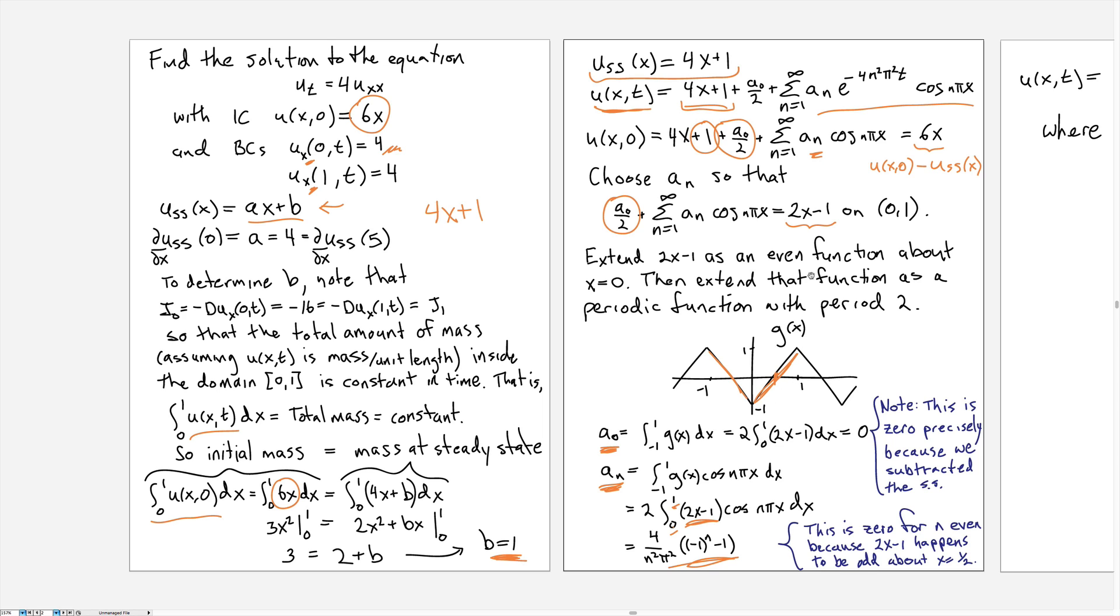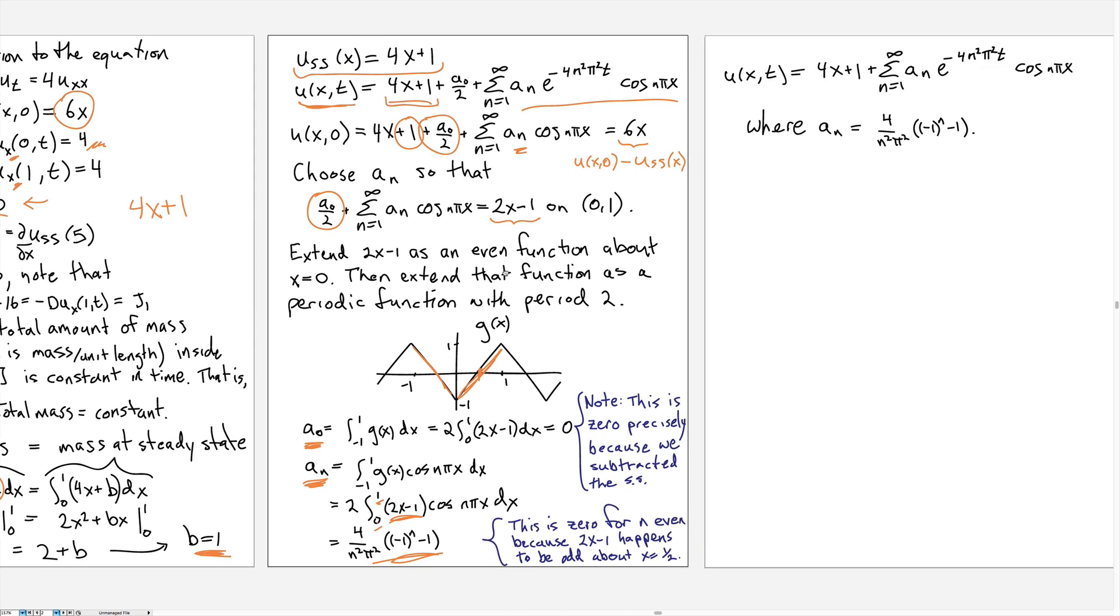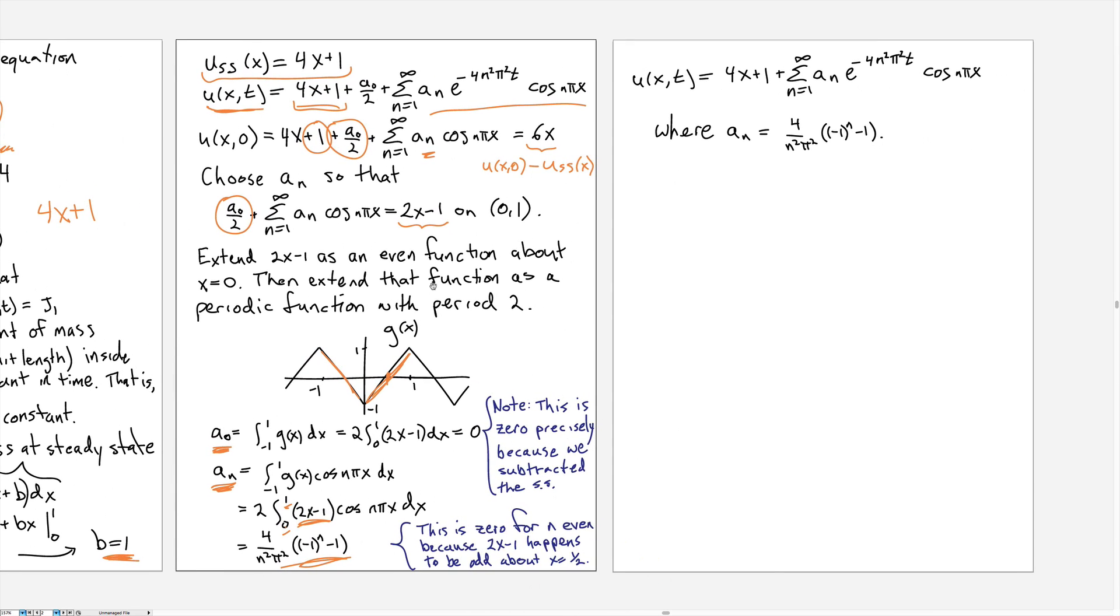Okay, so the last bit here that's off the end, I'll bring it on here, is the overall now final summary of the whole solution. So we have u(x,t) is equal to the steady state, which we calculated using a conservation of mass principle, plus a series of cosine terms with coefficients that are given by this expression here.